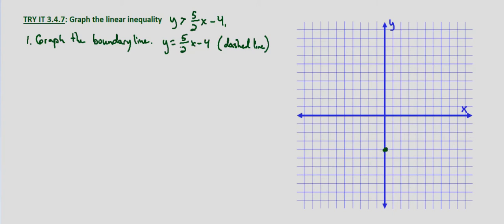And then using our slope, 5 halves, we have a rise of 5 and a run of 2. So we go up 5 and right 2. 1, 2, 3, 4, 5, over 2. We can do it again from there. 1, 2, 3, 4, 5, over 2.